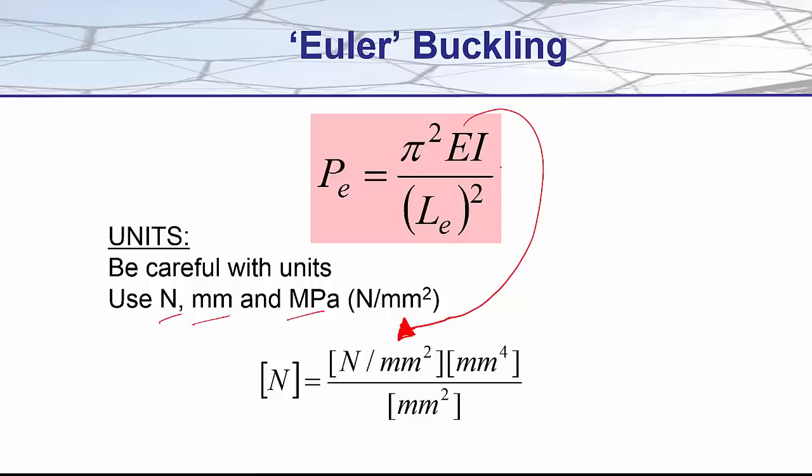Our second moment of area has units of length to the power of 4, so here would be millimeters to the power of 4. And our length would be in terms of millimeters squared and thus cancelling everything out. Our final value for our buckle load would be in terms of newtons.